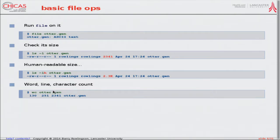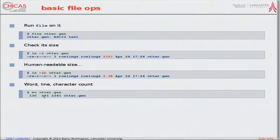Another useful thing, once I know it's a text file, is to count words, lines, and characters using `wc`. I can quickly see there are 130 lines, 251 words — things divided by spaces — and 2,341 characters, which matches what I got from the listing. This is intentionally a small file, but for bigger files these commands are very useful.